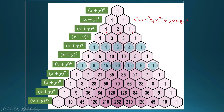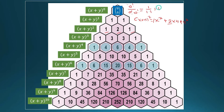Now this is where the combination formula comes in. (x + y) raised to zero equals one, and that is just equal to zero taken zero. Zero factorial is one, so zero taken zero equals one over (one times one), which is just equal to one.